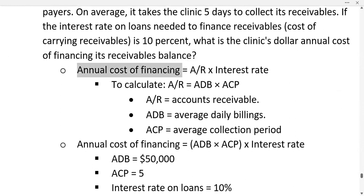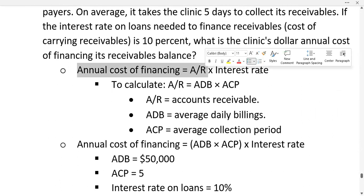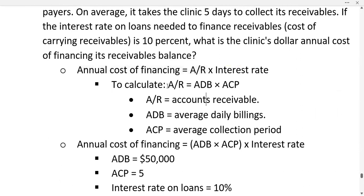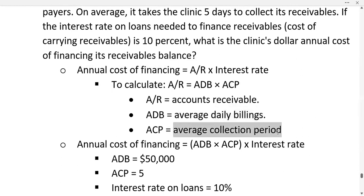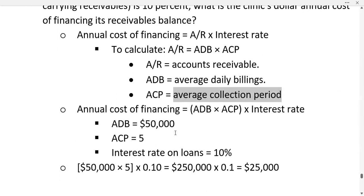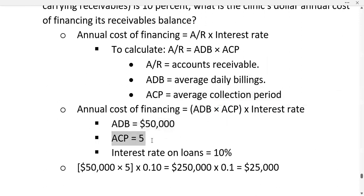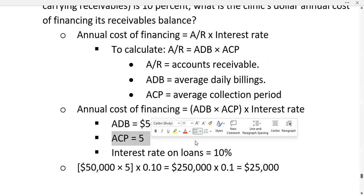To solve this, we use the formula: annual cost of financing equals accounts receivable times interest rate, which equals ADB times ACP times the interest rate. Here ADB represents average daily billings and ACP represents average collection period. In this case, ADB is fifty thousand dollars and ACP is five days.